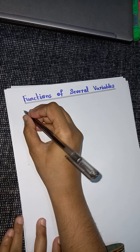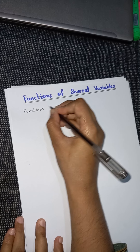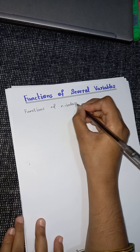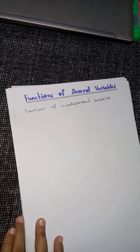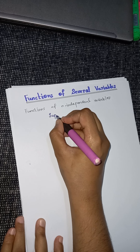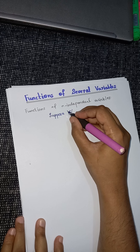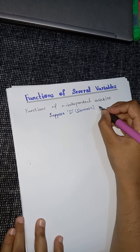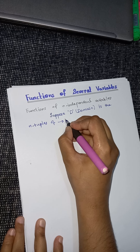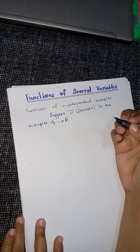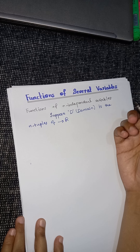Now students, if we discuss the definition of a function of n independent variables, let me write here: functions of n independent variables. Here we suppose that we have D, and D is the domain. The domain is the n-tuples of real numbers. I am using mostly mathematical notations so that our work should be easy and concise.